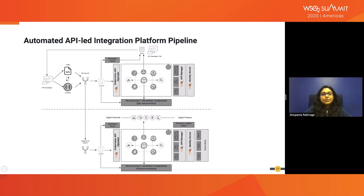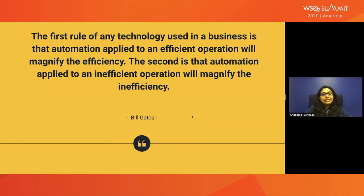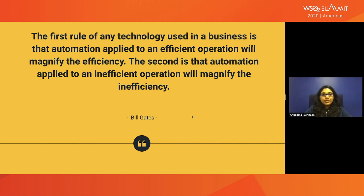I would like to end my presentation with a quote from Bill Gates. Even though automation is very important, if you don't have proper architecture or processes in place, you can't achieve the efficiency you're looking for — it can even decrease efficiency if you're not following the proper architecture. It's very important to follow the proper architecture and have the proper pipelines and required systems in place to achieve the required efficiency through automation. This is very important in cloud native architecture and for API supply chains. Thanks for joining us and feel free to contact WSO2 for any further queries — we are happy to help.